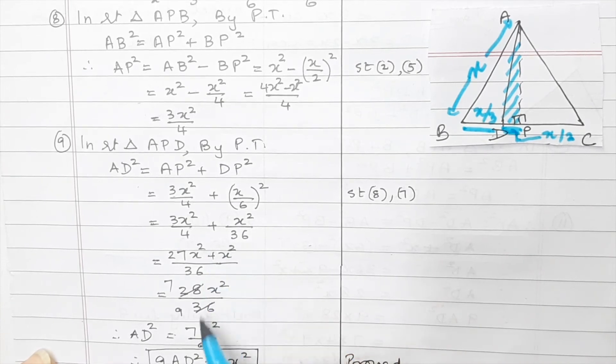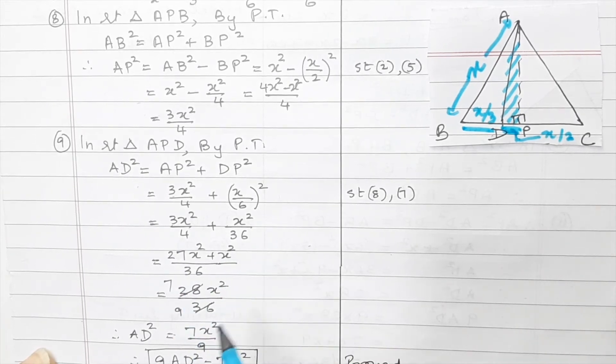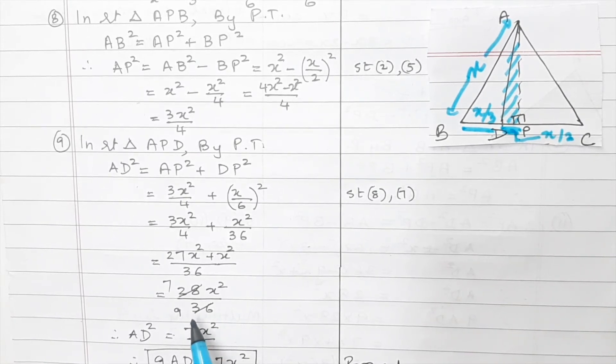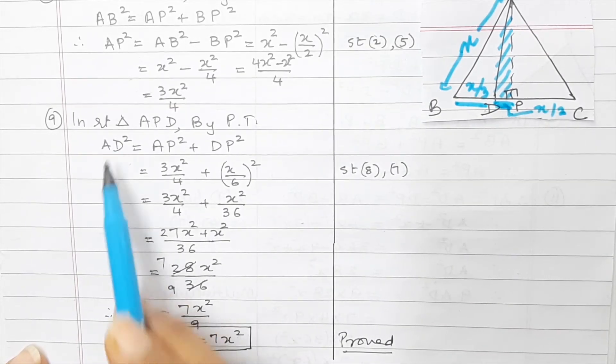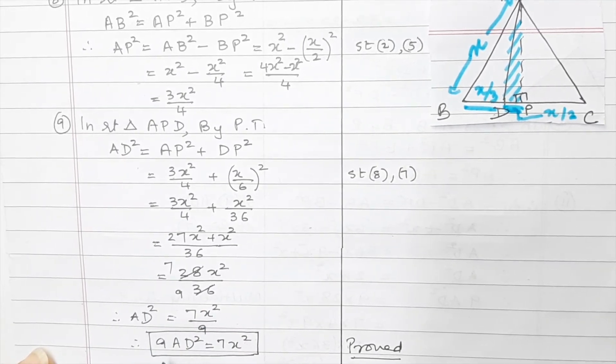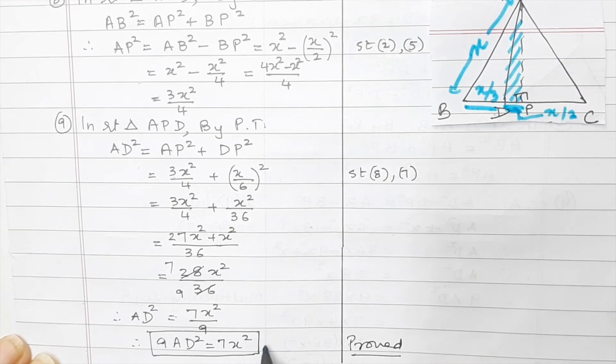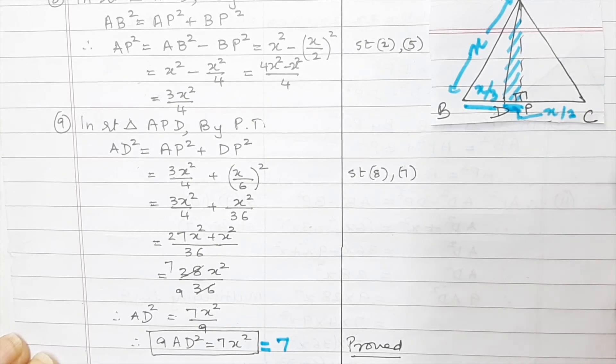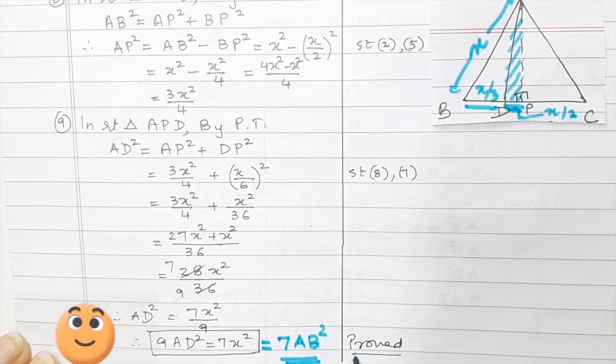Now we have nothing else to do. We have to just simplify this. So 4, 9 is 36. So 9, 3 is 27X squared plus this X squared. That gives us 28X squared upon 36. Now common factor over here is 4. So you have 7X squared upon 9. And then we shall have this AD square I write here. So AD square is equal to 7X squared upon 9. Cross multiply 9 AD square equal to 7X squared. Now what is X squared? Your X squared is nothing but your AB or BC or AC. So we will say equal to 7AB squared. And that is how we proved it.